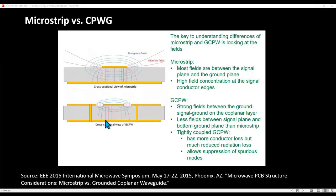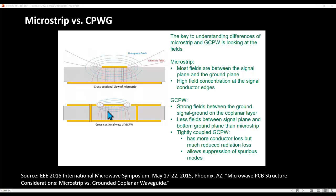Grounded CPW can be operated in two configurations. In tightly coupled grounded CPW, the distance between the central conductor and the coplanar ground planes is kept small. This results in slightly more conductor loss, but it is less susceptible to radiation loss — always preferable at higher frequencies where wavelength is smaller. Tightly coupled lines also allow better suppression of spurious modes. In loosely coupled grounded CPW, the ground is pulled farther from the center conductor, reorienting the field distribution. For practical purposes, tightly coupled grounded CPW lines are typically preferred.